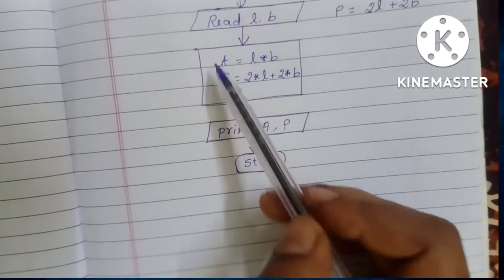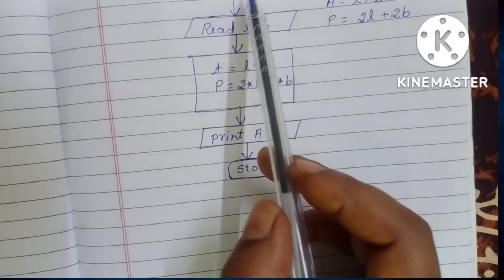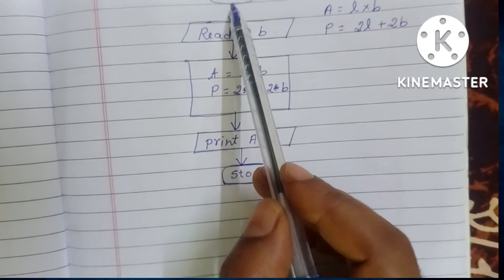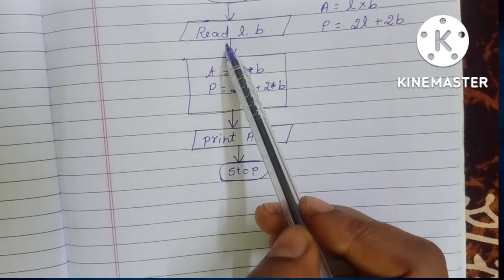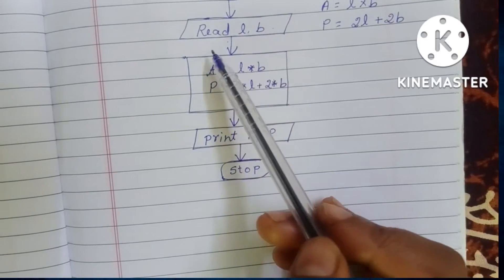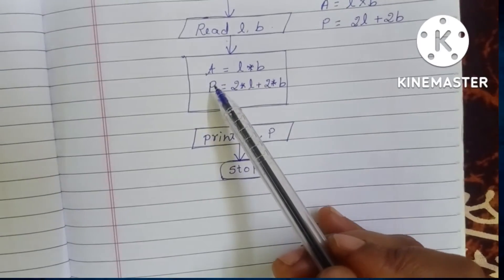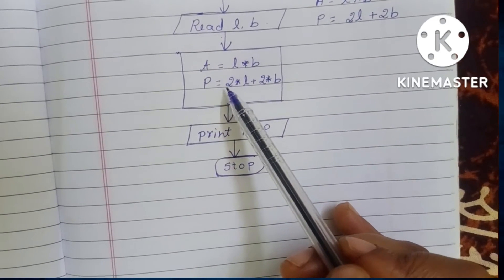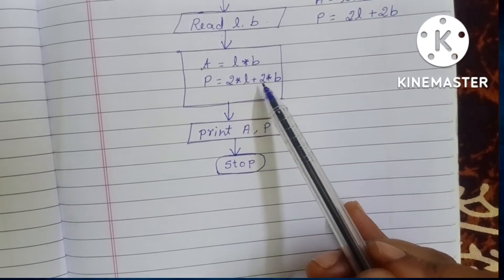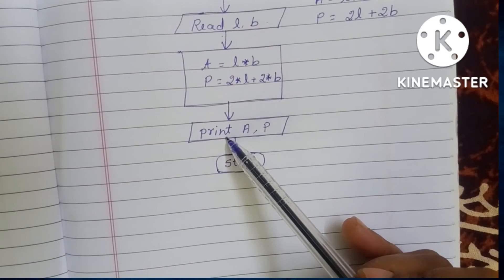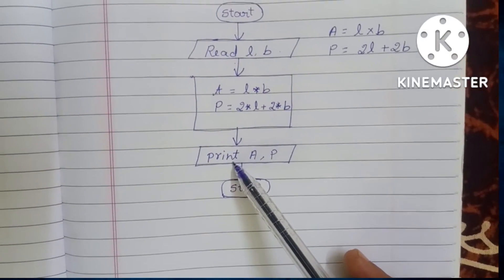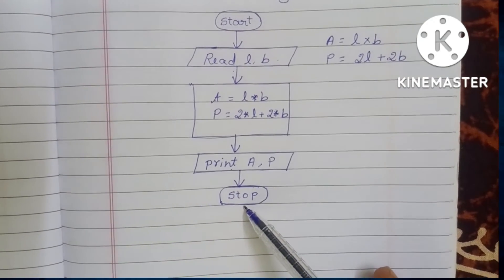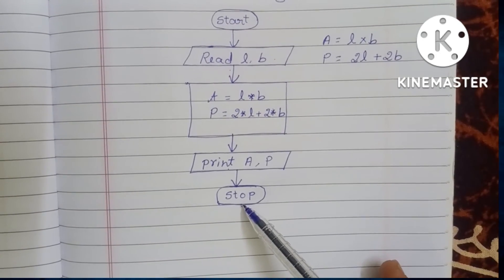To recap the full flowchart: start with the START statement in an oval shape; read input Length and Breadth in a parallelogram; write the process steps in a rectangle — A = L × B and P = 2L + 2B; print the output A and P in a parallelogram; then stop the flowchart using the STOP statement.